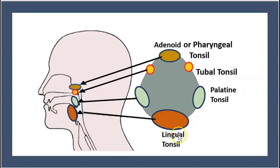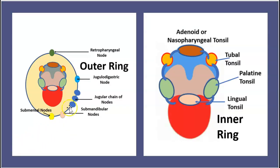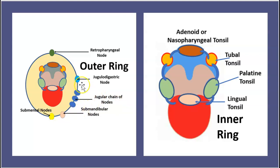When looking at where the tonsils are located, from an aerial view we can see the adenoid tonsil at the top, the palatine tonsil, the tubal tonsil, and the lingual tonsil. From a side view of the mouth and an aerial view, we find nodes in the areas around the tonsils. At the top near the adenoid tonsil we find the retropharyngeal node, between the tubal and palatine tonsils are the jugulodigastric nodes, and there's a jugular chain of nodes running along the side. Lower down near the lingual tonsil are the submandibular and submental nodes.